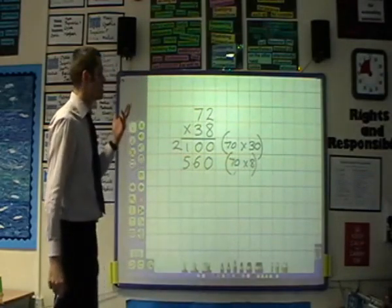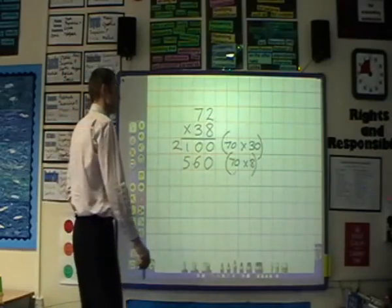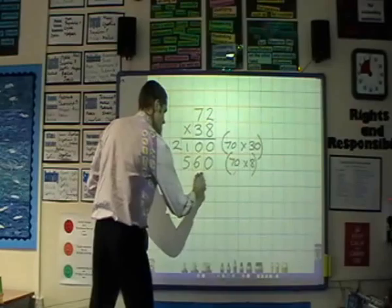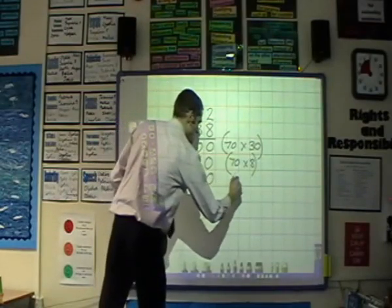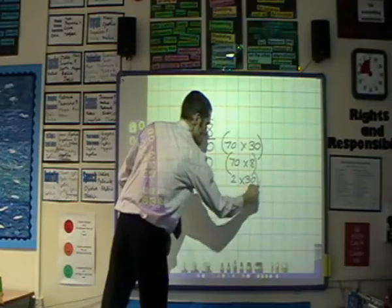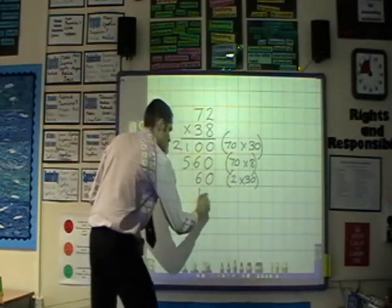Then they would move on to multiplying 2 by 38, so initially 2 times 30 which is 60, and finally 2 times 8 which is 16.